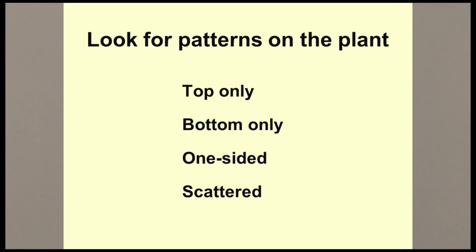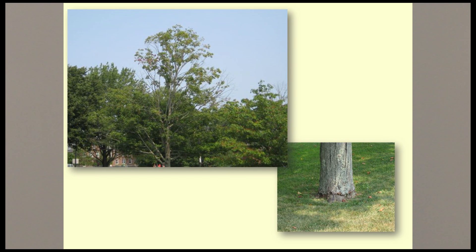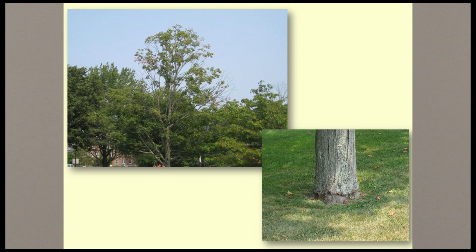When diagnosing a plant problem, it's important to also note if the symptoms occur in a particular part of the plant. One-sided symptoms are usually associated with a disorder. Scattered symptoms are usually due to diseases and insect pests. It is also important to note if symptoms are limited to the inner or outer portions of the plant. In this example, the top of the tree exhibits thinning and dieback, which often means there's a problem with the trunk or roots. You should check the trunk and the base of the tree to see if there are cankers or wounds. This particular tree has extensive wounds to the base of the trunk, likely due to lawn mower injury. In addition, there's no root flare, indicating the tree was planted too deep or a grade change has buried the root flare.